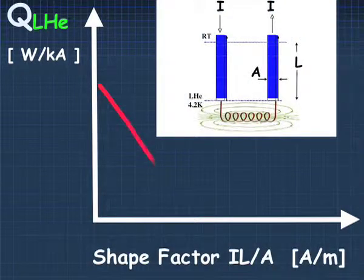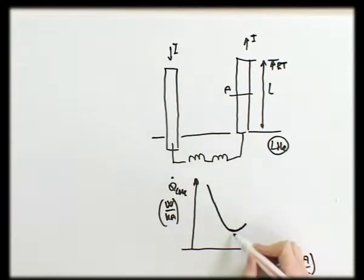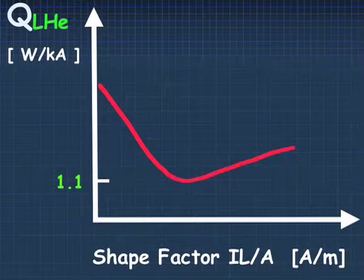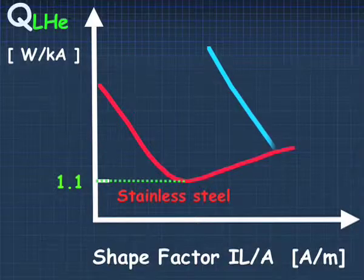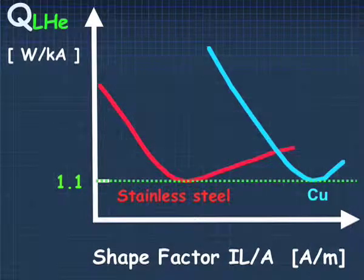We can find that there is an optimum geometry which minimizes the heat conducted into the helium bath. We have a curve with a minimum which corresponds to 1.1 Watt per kilo-Ampere, and we find that this minimum does not depend on the material chosen for the realization of the leads. Whether the lead is made of stainless steel or copper, we get a different curve, but with the same minimum heat load of about 1.1 Watt per kilo-Ampere.